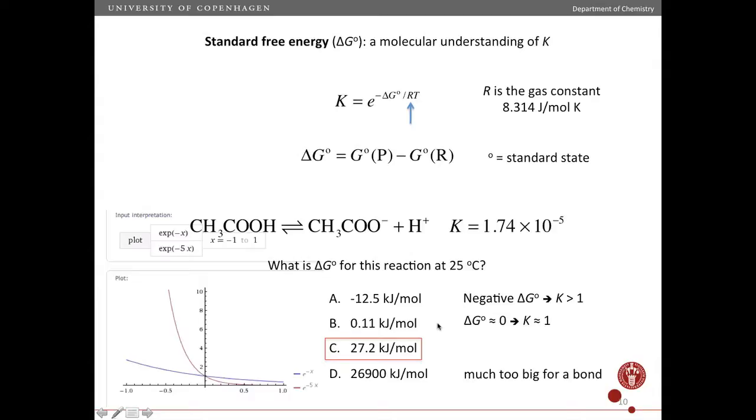Okay, so to do the calculation, this is to emphasize what I said earlier, right? So negative delta G means a K larger than 1.